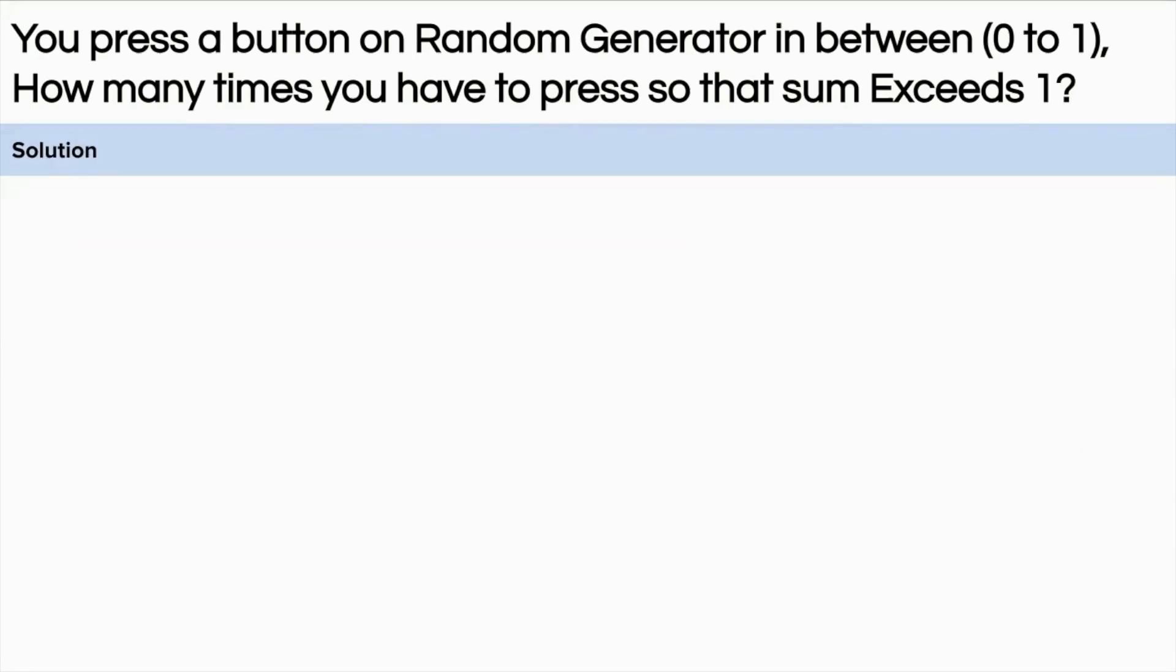Now back to the question. Let's assume that f(x) is a function which tells the average number of presses so that the sum of the numbers exceed x. In this question we need to calculate f(1) because we want to get the number of trials such that the sum exceeds 1. That is why we need to calculate f(1).